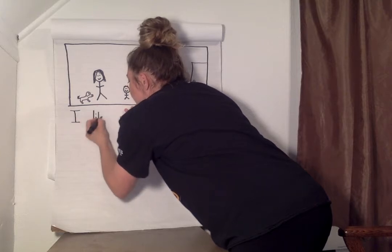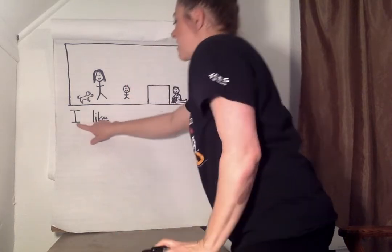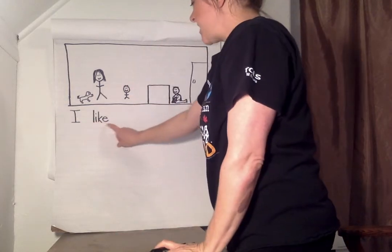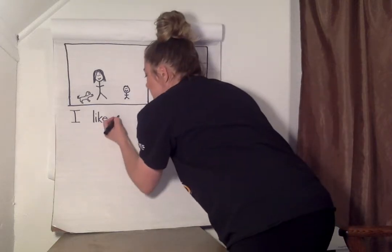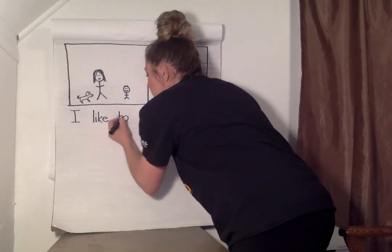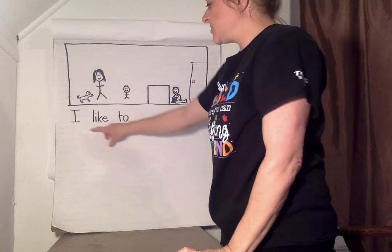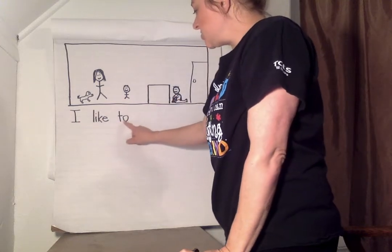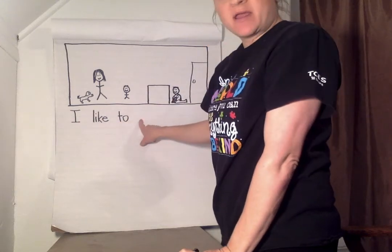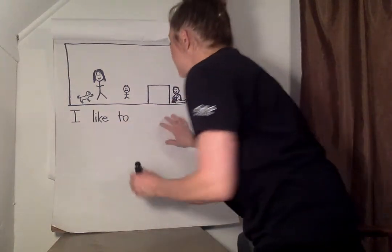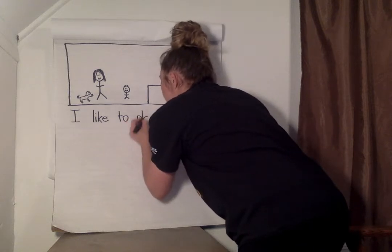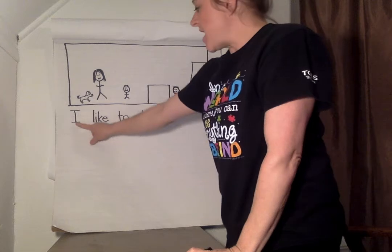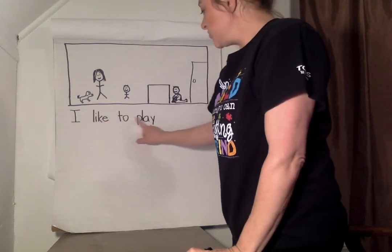Don't forget fingers and spaces. I like to — 'to' is one of our sight words. T-O. Let's reread. I like to play — there's another sight word. P-L-A-Y. I like to play.